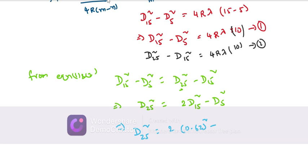This gives: D₂₅² = 2(0.62)² - 0.09 = 0.6788 - 0.09.